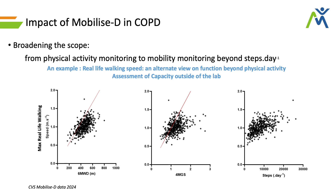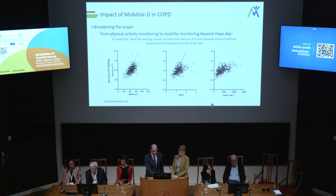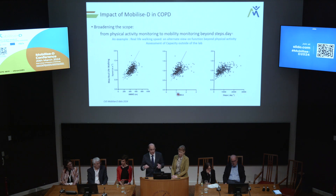The middle figure shows that looking at walking speed in daily life is different from looking at walking speed in the lab. Here you see the 4-meter gait speed where we ask patients to walk at their usual speed — but in the home situation, even looking at their maximal walking speed, they walk much slower than their usual walking speed in the lab. So you really have to measure this in the home situation.